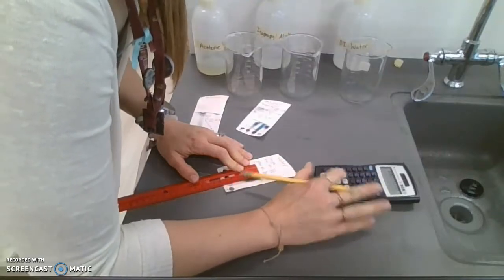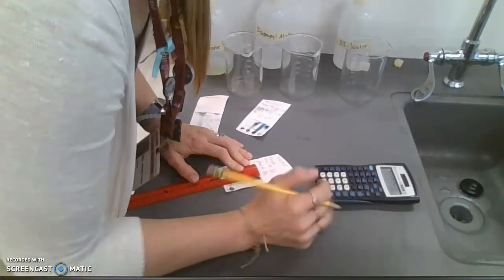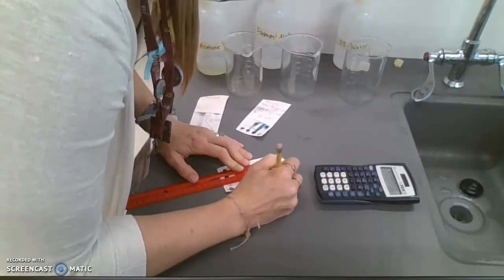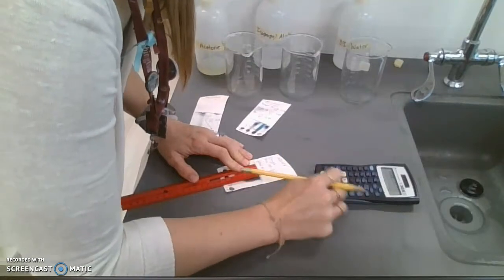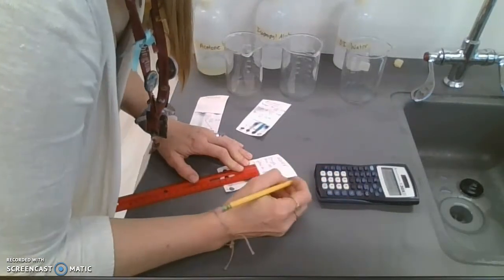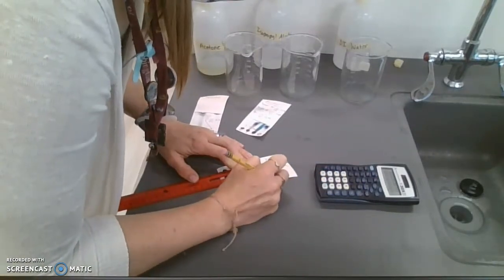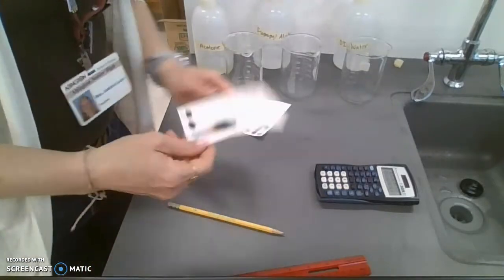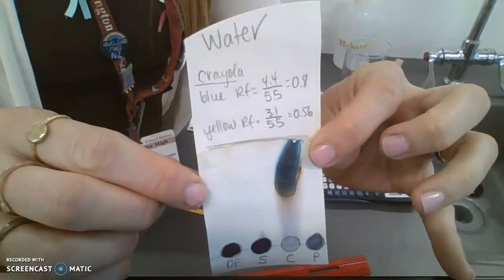So with a quick calculation: 4.4 divided by 5.5 equals 0.8, and 3.1 divided by 5.5 is 0.56. So here we have our analysis of the two different pigments in the washable Crayola marker.